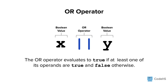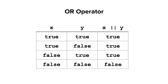The or operator evaluates to true if at least one of the operands is true, and false otherwise. The or operator is denoted as two pipe symbols, found above the return or enter key on the keyboard, with no space, and requires two Boolean values as operands. A truth table for the or operator shows that the expression evaluates to true if either x or y are true. The only way to get a false expression is when both x and y are false.